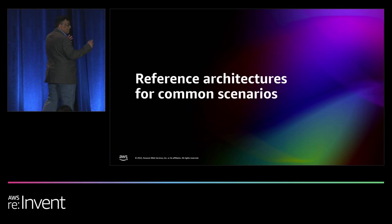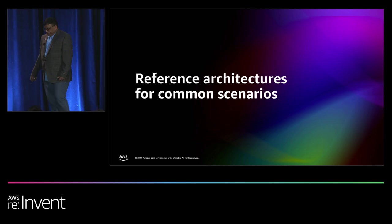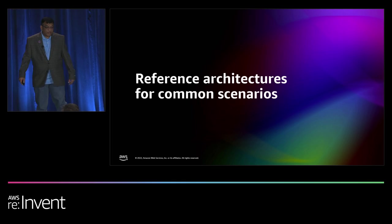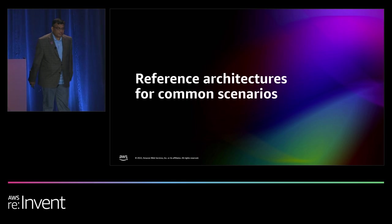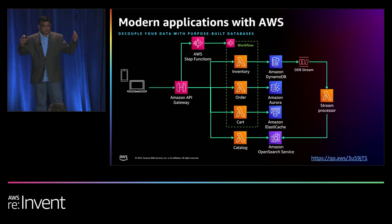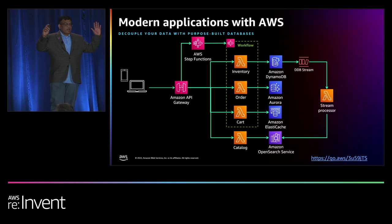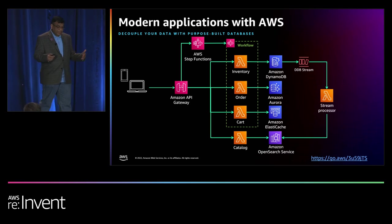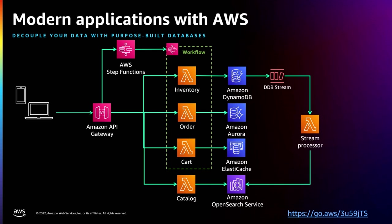Now we learned about layered modern data architecture. Let us apply what we learned and deep dive into a few reference architectures for common scenarios that can be used across various industries. We talked about Modernize — you can build modern applications using AWS purposeful databases to decouple your data and improve your application performance. For example, your product inventory data can be arranged with key-value pairs for faster access, so you can use Amazon DynamoDB for your inventory data. Your orders might need a relational database, so you can use Amazon Aurora. Your shopping cart needs low-latency access, so you can use Amazon ElastiCache. Similarly, you can use Amazon OpenSearch Service for website search on your product catalog.